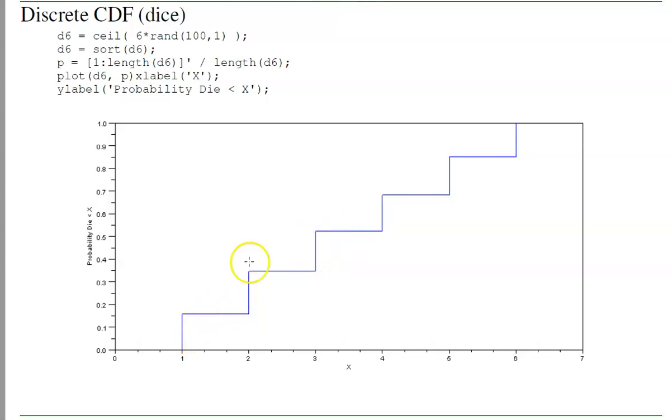To figure out what number I rolled, what I would do is generate a random number between 0 and 1, and then come over here, and it says that probability corresponds to a 4. I just rolled a 4.